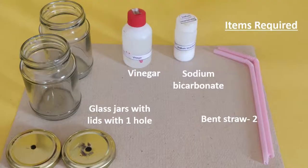For this experiment, we need vinegar, sodium bicarbonate or baking soda, two glass jars with one hole in their lids and two bent straws. To test the nature of the gas generated in this reaction, we will also need an ice cream stick or matchstick and a test tube holder.